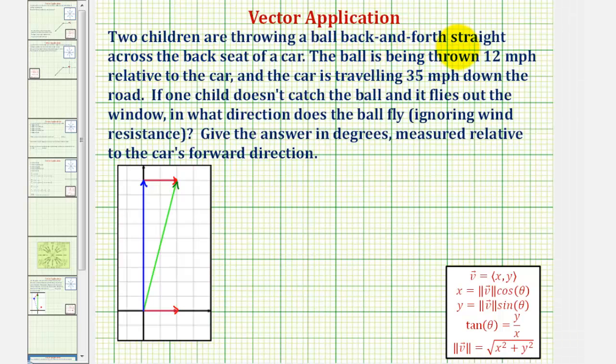Two children are throwing a ball back and forth straight across the back seat of a car. The ball is being thrown 12 miles per hour relative to the car, and the car is traveling 35 miles per hour down the road. If one child doesn't catch the ball and it flies out the window, in what direction does the ball fly, ignoring wind resistance? Give the answer in degrees measured relative to the car's forward direction.